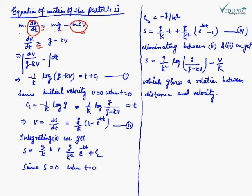Integrating both sides: dV / (G − KV) = dt. The integration of 1/(G − KV) gives log(G − KV) × (−1/K), so we have (−1/K) log(G − KV) = T + C1, where C1 is the integrating constant.